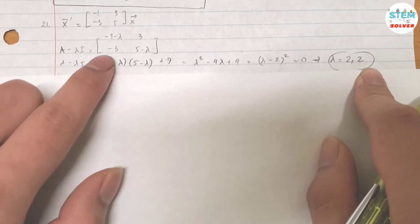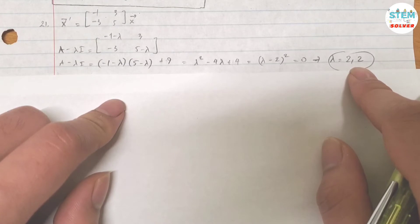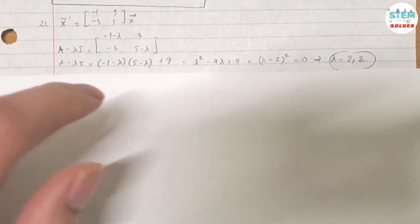And 2. So for this 2 by 2 matrix, you got a repeated value. Alright, so let's find out what those eigenvectors are. Let me flip the page.